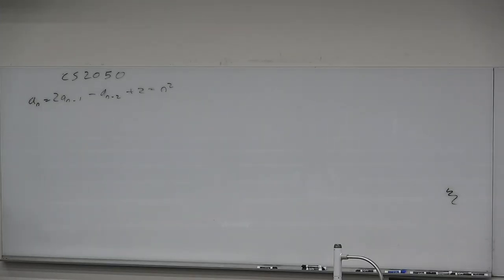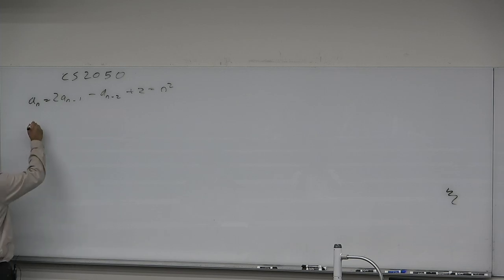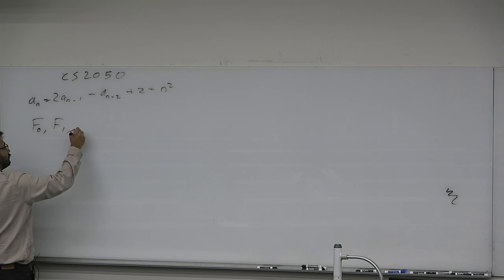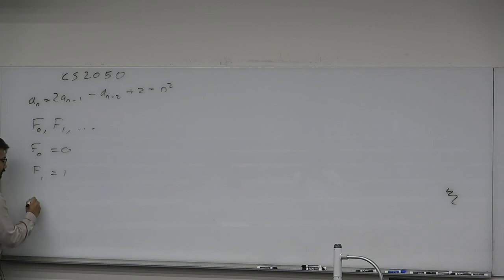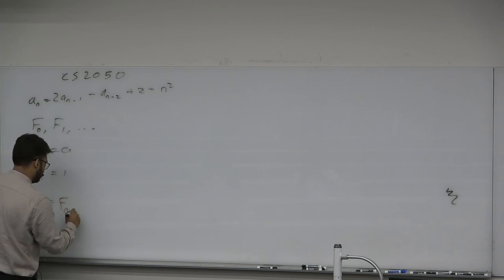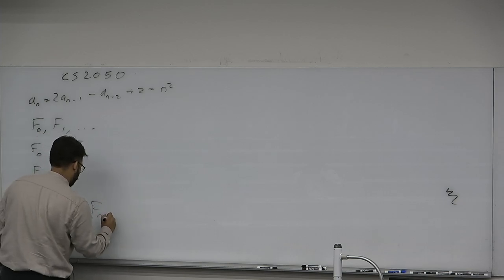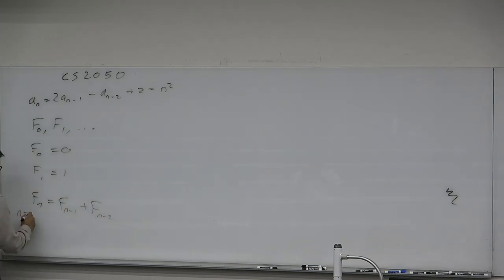There's another recursive sequence that everyone should know — everyone has thought of before they heard the term recurrence. What is the only recurrence you may have ever known? Fibonacci. Fibonacci numbers are defined as: F(0) = 0, F(1) = 1, and F(n) = F(n-1) + F(n-2) for n greater than or equal to 2.